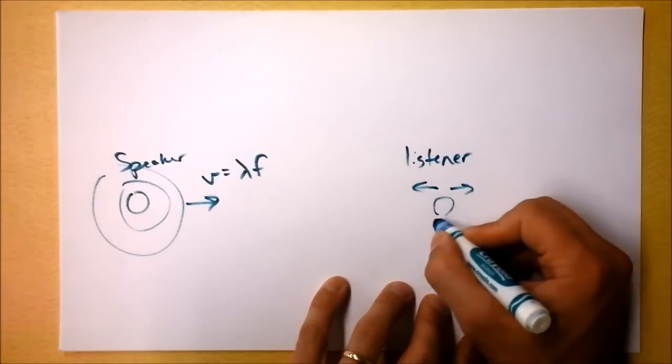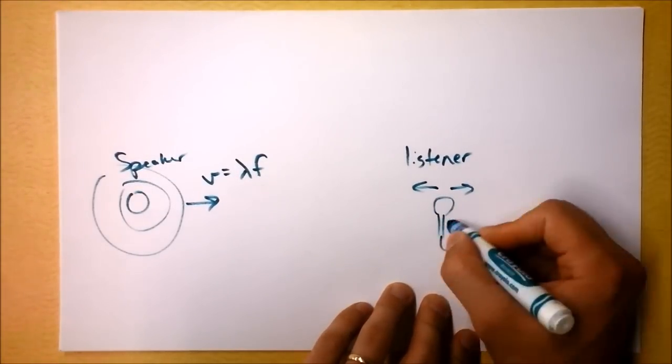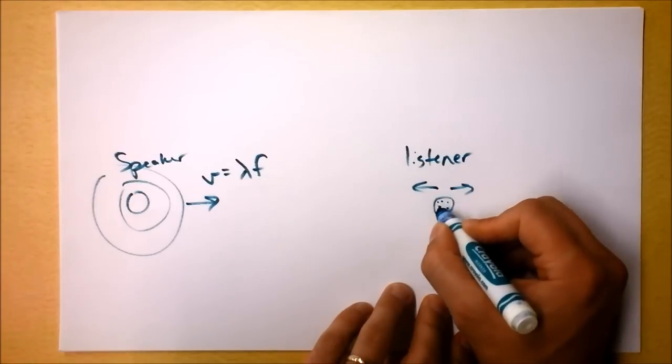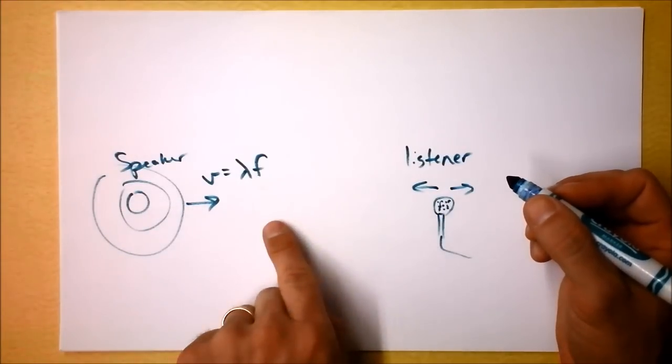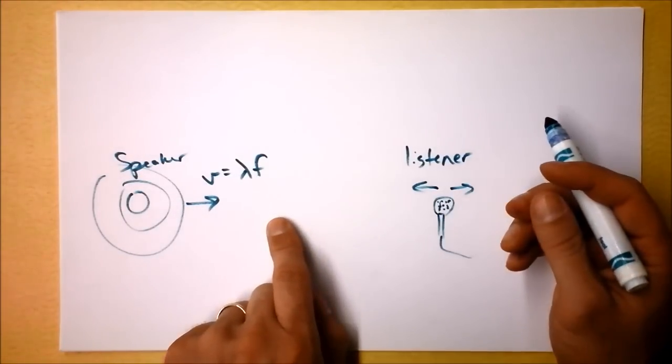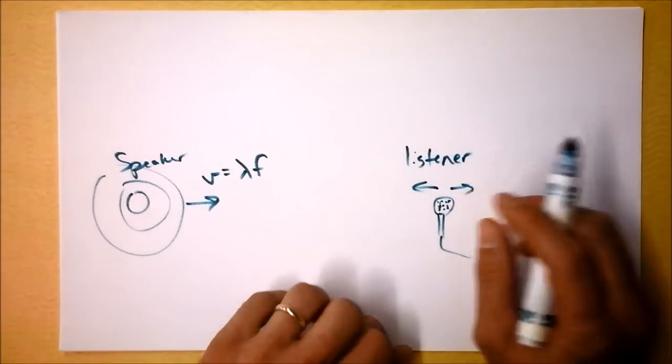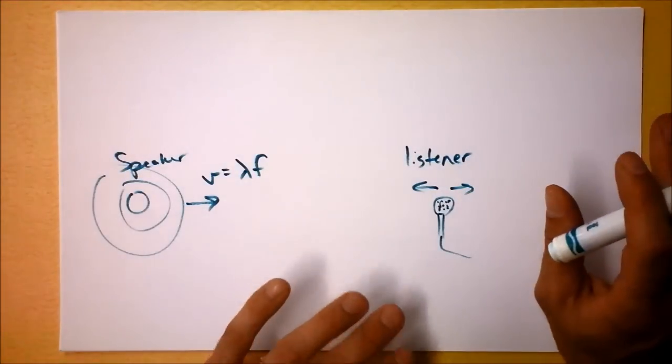Listener is doing things like, well, the listener could be going this way or this way or just staying still. But anyway, the listener, I could even draw the listener as some kind of glorified microphone who's going to be able to hear what's going on over here. So if the microphone is moving towards it, the pitch might actually change. If the microphone is moving away from it, then the pitch might actually change.